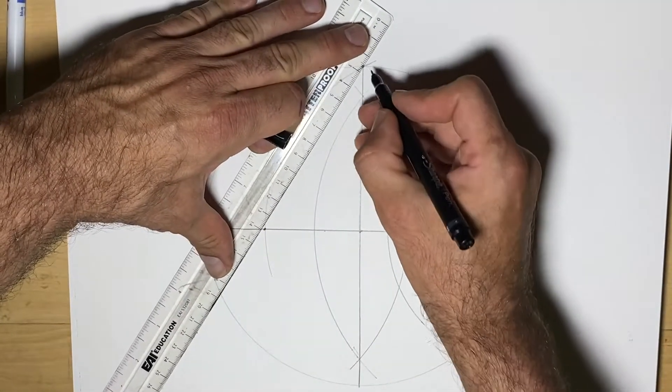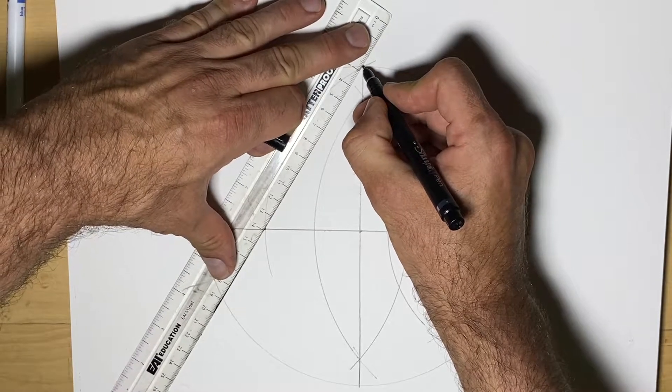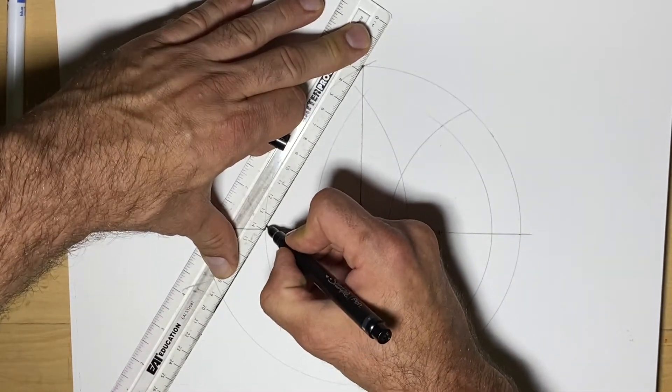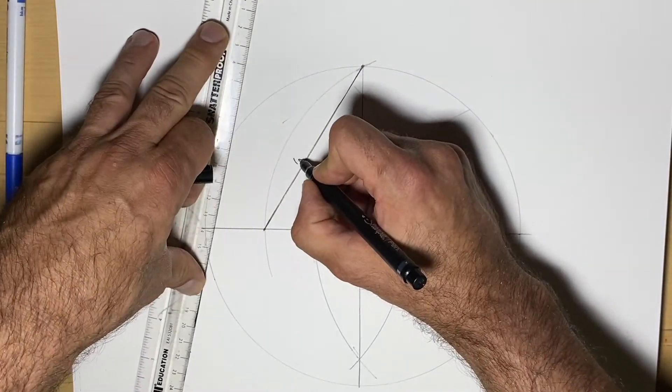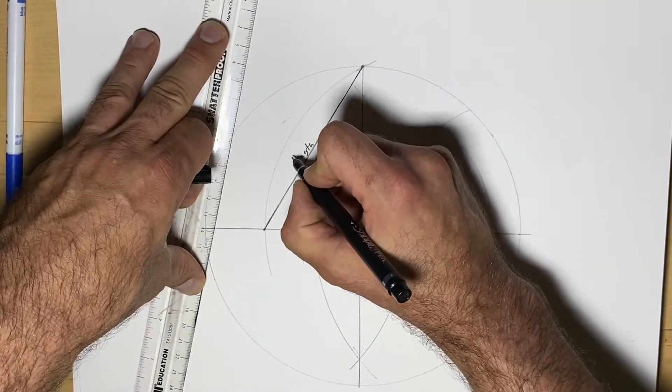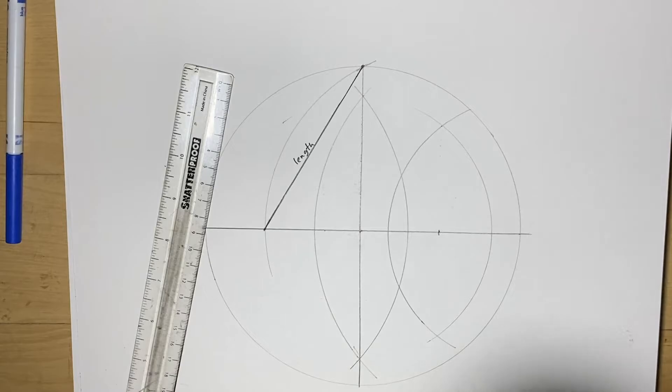If we do that, we find this is the length we're going to use, and it's going to fit five times around the circle.